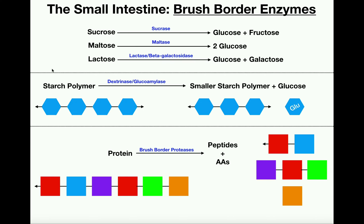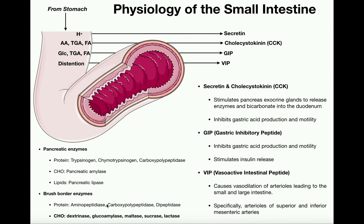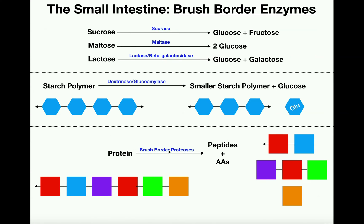We also have various brush border proteases: aminopeptidase, carboxypeptidase, and dipeptidase. Collectively, these enzymes break a protein into smaller peptides or amino acids. For example, a peptide six amino acids long might yield a dipeptide, a tripeptide, and a free amino acid. Large proteins cannot be absorbed across the wall of the small intestine, so we have to break them down. We normally think of amino acids as what's absorbed, but we can also absorb dipeptides and even smaller tripeptides.